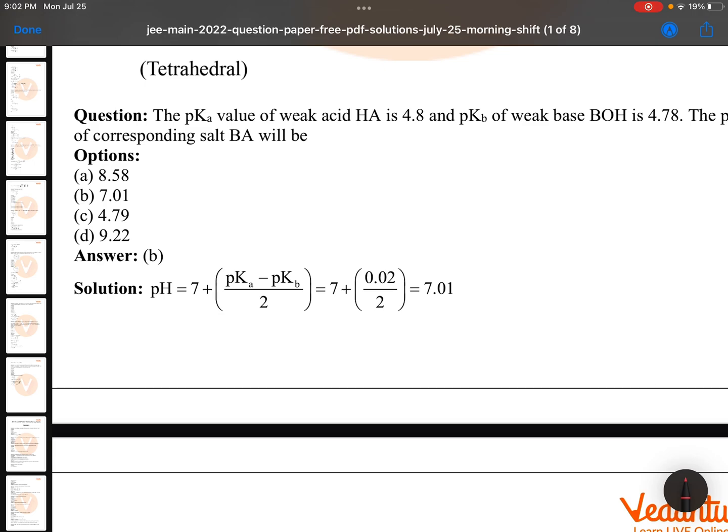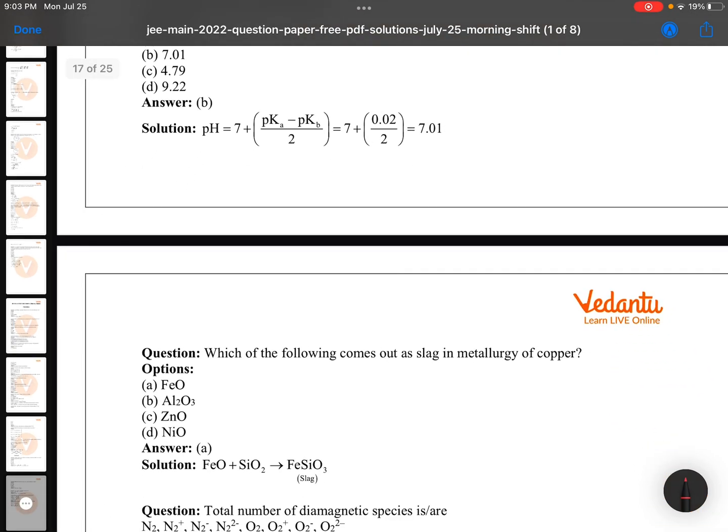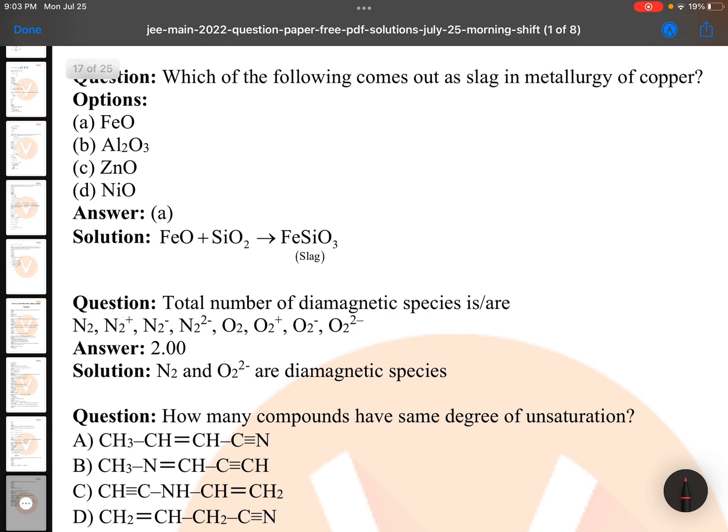6.99 option is not mentioned here, so 7.01 you can very comfortably go. Thank you Vedantu for providing this question paper.